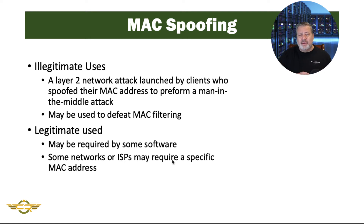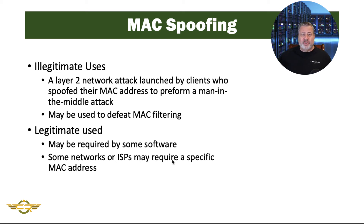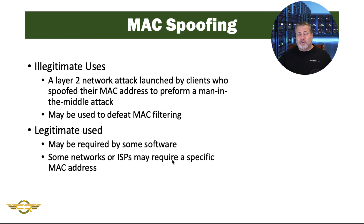We can also use MAC spoofing to defeat MAC filtering on some applications and networks. At some points, we may use rudimentary protection measures like MAC filtering — only allowing specific MAC addresses to access resources on our network — and this is easily defeatable by changing our MAC address or doing MAC spoofing. There are some legitimate reasons for doing this: it may be required to have a specific MAC address by some software, and some networks or ISPs may require a specific address. Though there are legitimate uses for MAC spoofing, it is a technique used by attackers to bypass filtering technologies and also to launch man-in-the-middle attacks. This is one of the things we will have to know for our Security Plus exam.